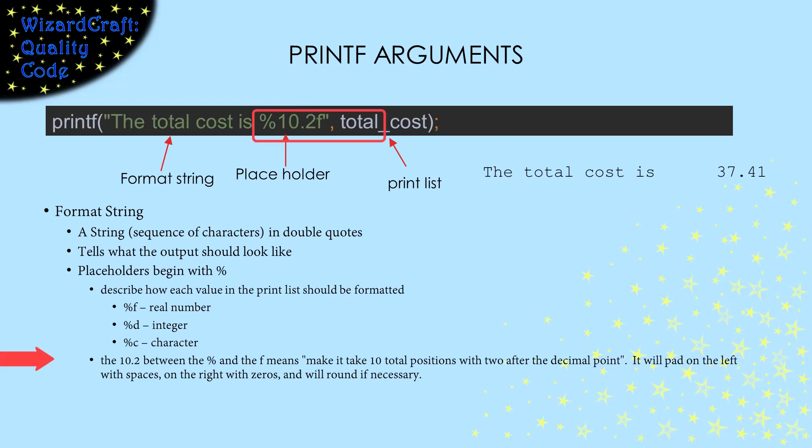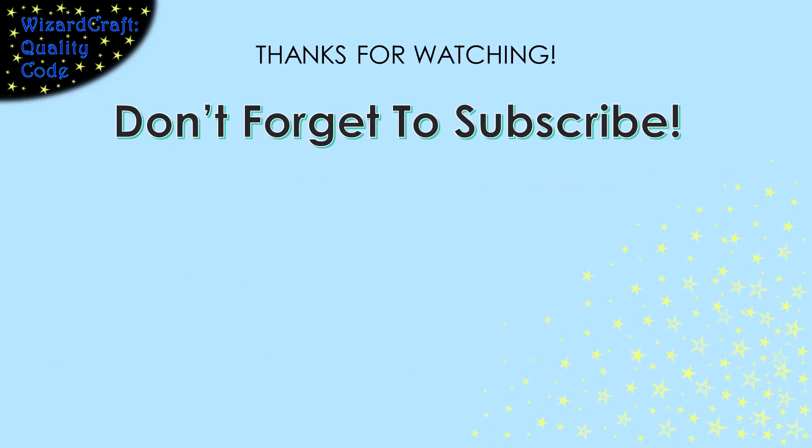So if our total cost was 37.41, it will be formatted like this. There are 6 spaces between the is and the 3, 1 from our format string and 5 to make the total width of our number 10 characters. That's it for our overview of the structure of C programs. The next thing we will look more at is the detail of those compiler directives, the pound include and the pound define.